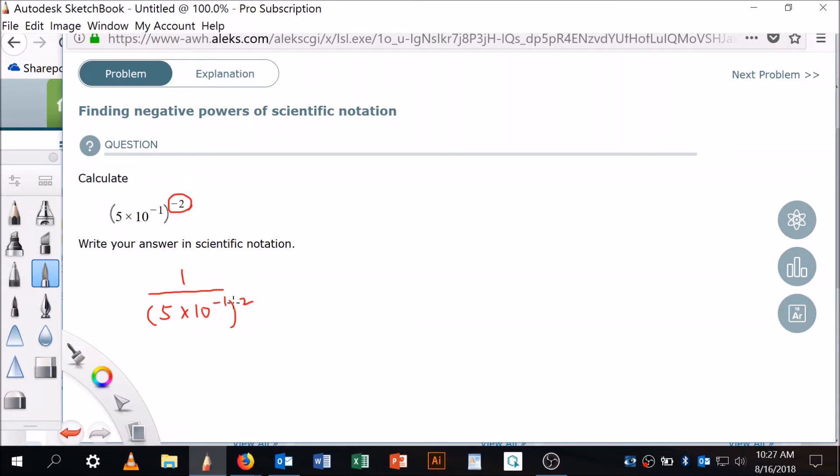Now I'm going to take my understanding of exponents as it pertains to parentheses and I'm going to say this is the same thing as one over five squared times ten to the minus one squared.